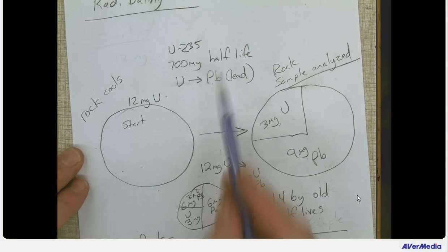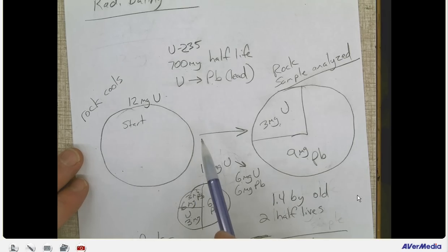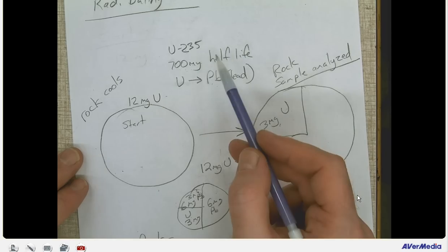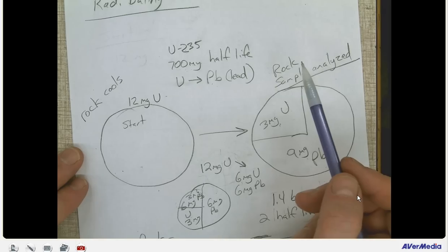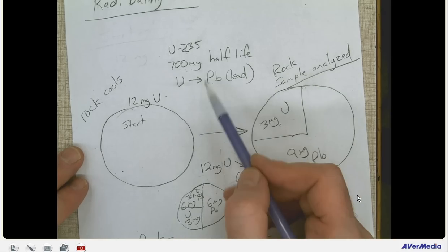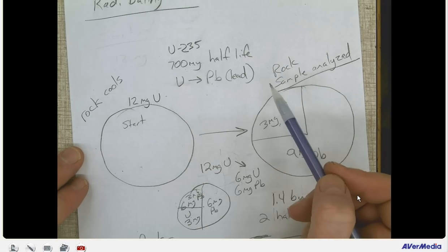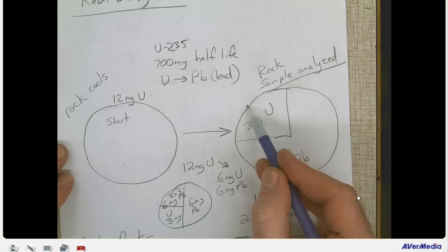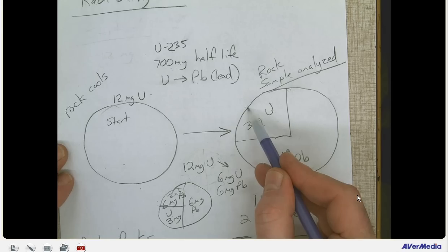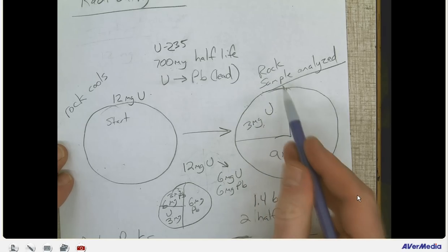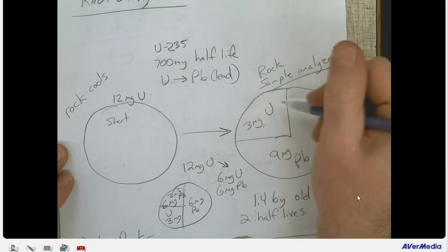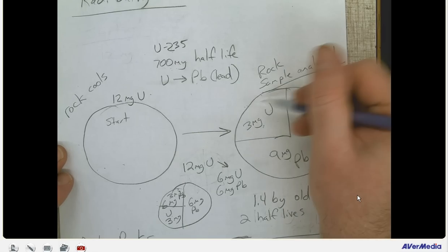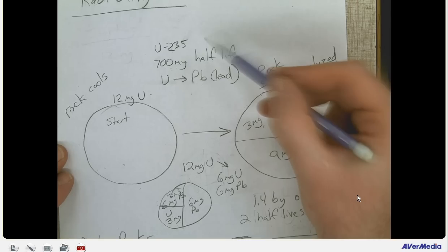There are a variety of different radioactive elements used to date rocks, and uranium is one of the more common ones for longer time spans. Carbon-14 wouldn't be used for very old rocks because it's only good for about 50,000 years. As each half-life goes by, you eventually get to such a small amount of uranium that you can't accurately measure it, so each radioactive isotope has a different range for its usefulness.